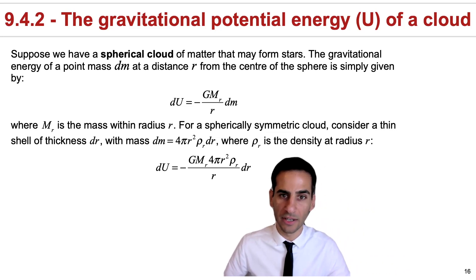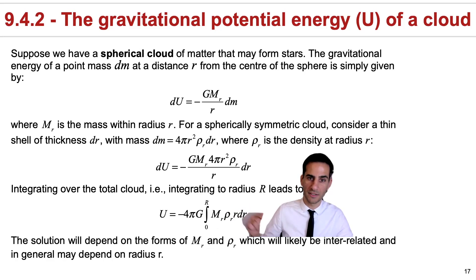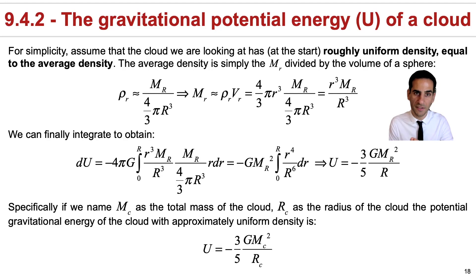With these assumptions, then we can actually rewrite the expression for the gravitational potential energy as this. And if we actually integrate over the total cloud, essentially integrating up to radius big R, this leads to an expression that looks like this. We can actually get the 4π and G out, they're constants. But up to now, we have not made any assumptions about how the mass and the density depend on the radius. For simplicity, let's just assume that the cloud that we're looking at has, at least at the start before it collapses, for example, roughly uniform density equal to the average density.